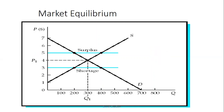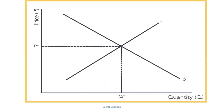In the second option, it's when the price is below the price of equilibrium. Let's suppose it's at $3. Here it's for the interest of the consumers, and this is why they will consume more. So at $3, the quantity demanded is 400, and the quantity supplied is 200. So the quantity demanded is greater than the quantity supplied, and this is why we're having a shortage.